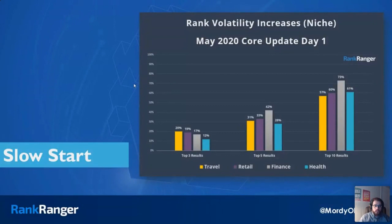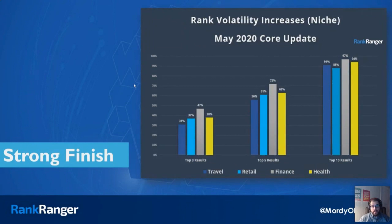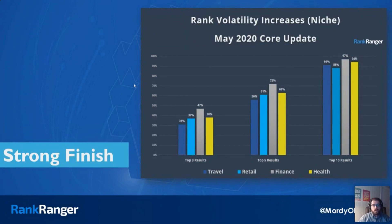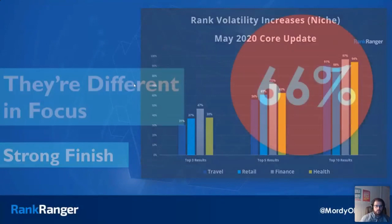For the top three results: travel niche saw a 20% increase in rank volatility, 19% for retail, and so forth. That's bigger than your average unconfirmed update, but not core update big. Looking at the full update period, you're talking 30–40%, upper 40% rank volatility increases. For the top 10 results, you're looking at 90% increases. This slightly edges out the January 2020 core update, putting it right up there in medic update territory. This is a very big update.